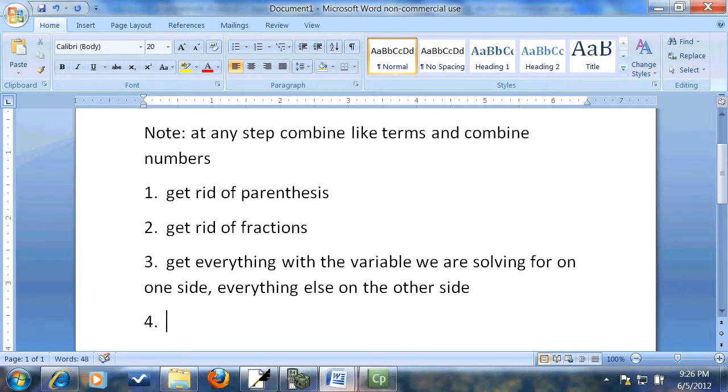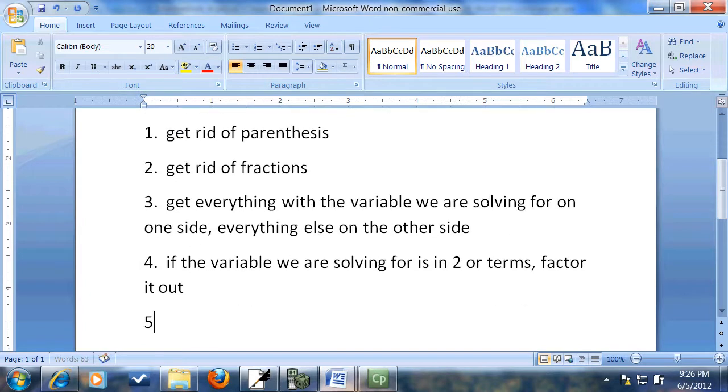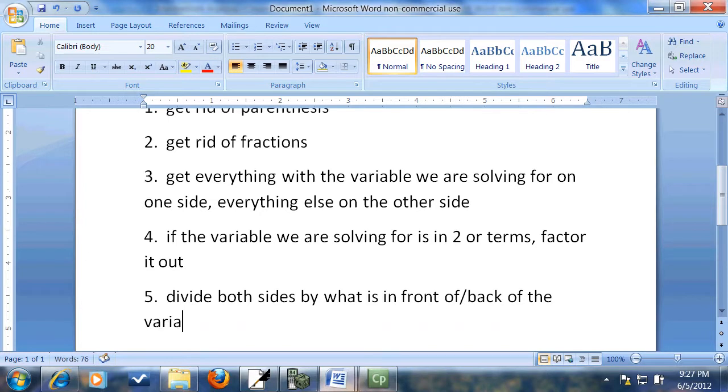When I say get everything, I'm talking about terms, which is what we're dealing with here, but they don't actually have to be terms. Step four, if the variable we are solving for is in two or more terms, factor it out. And step five, divide both sides by what is in front of the variable we are solving for.